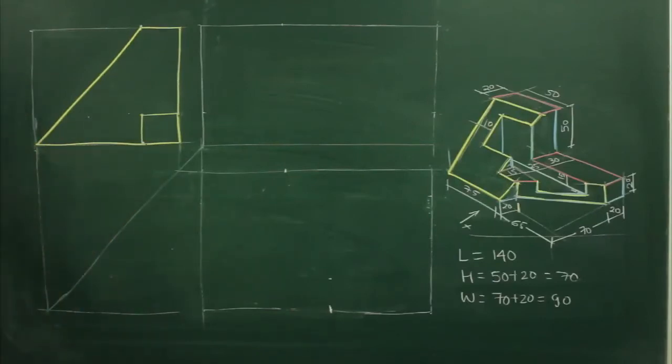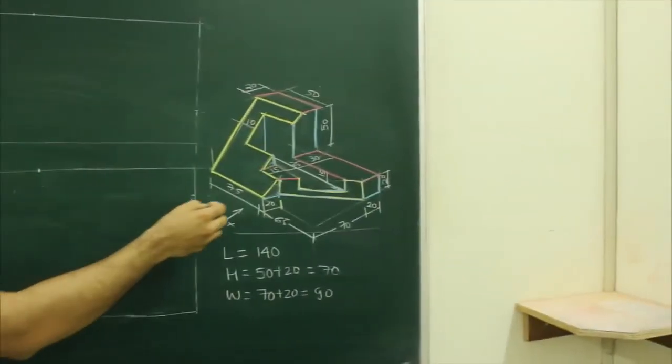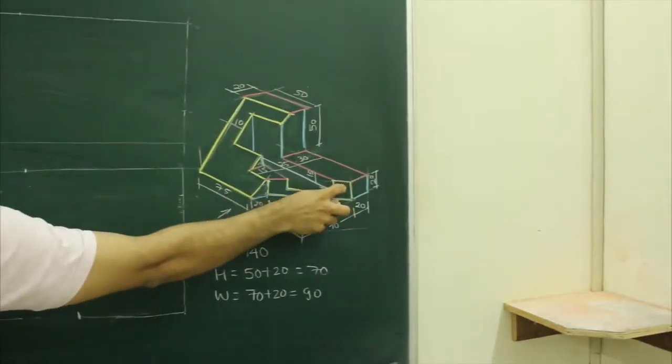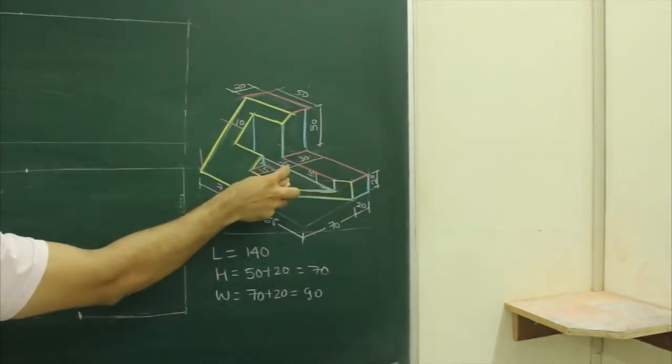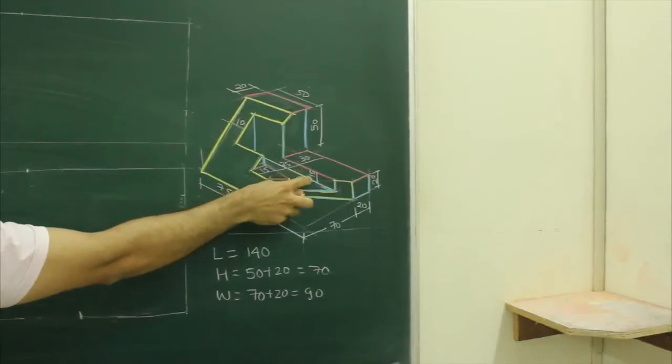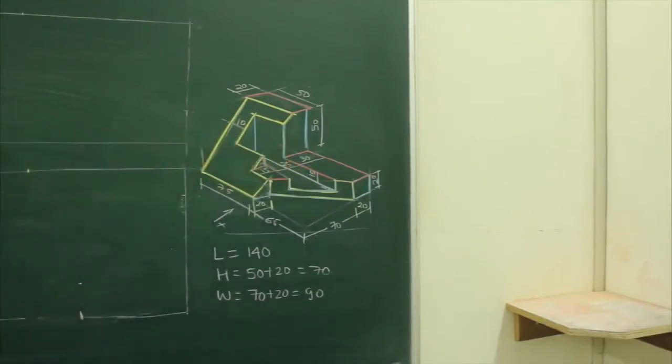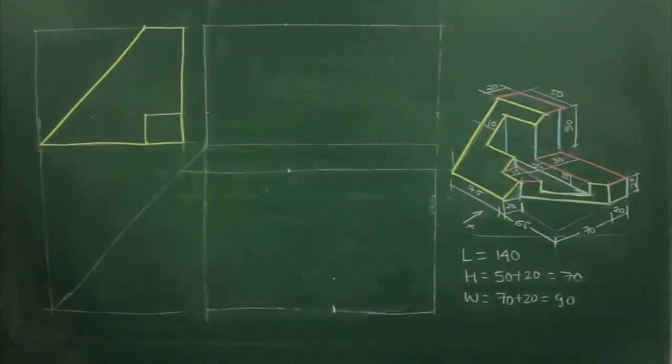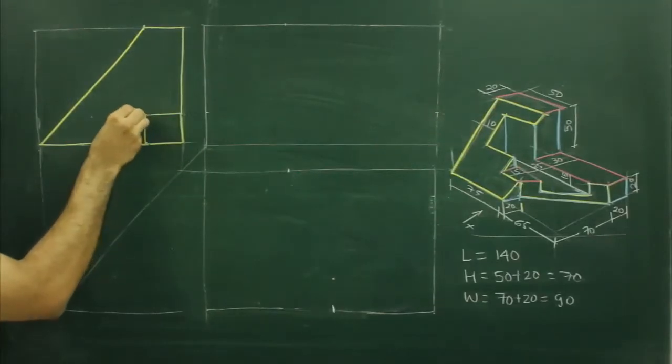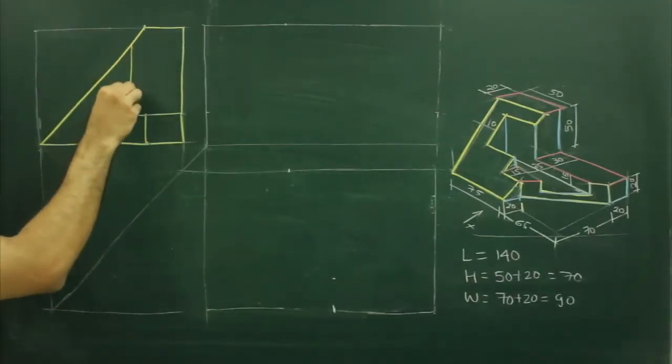After that if you see inside view they have given this part, they have given 30, 25 and 15 and this depth is 15. So what we will do, we will mark 50 from here, we will draw a straight line.